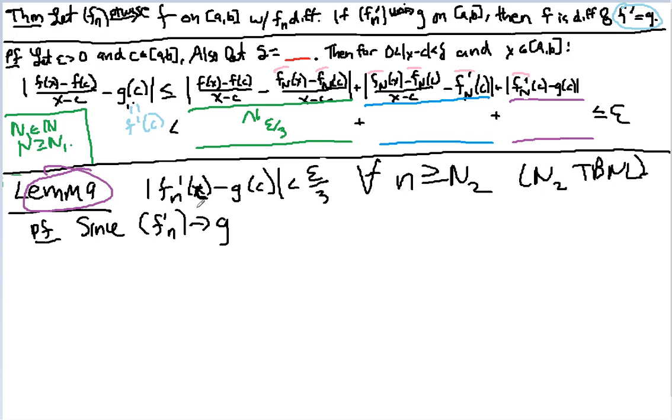There exists an n2 such that f_n of c minus g of c is less than epsilon over 3 for all n bigger than or equal to n2. Now, I will note a couple things. First of all, this c is the exact same c that I fixed up here.